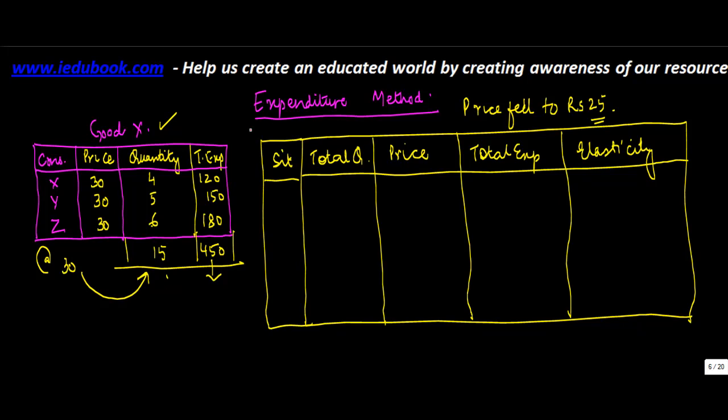There could be three situations. Let's take the first situation. So let's say the price of the goods fell from 30 to 25, and the total expenditure which the consumer did was 500. Now what happened in this case? Your total expenditure has increased—the earlier one was 450. So your total expenditure increased from 450 to 500, and the total quantity demanded was 500 divided by 25, which is equal to 20.